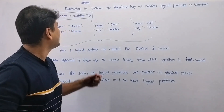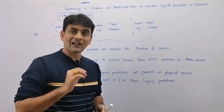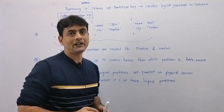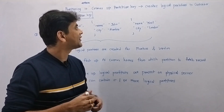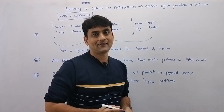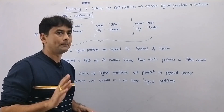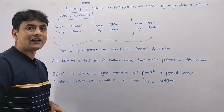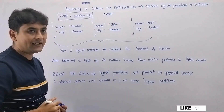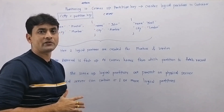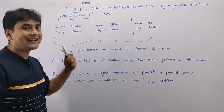In this video, let's discuss partitioning in Azure Cosmos Database. When we create a container, we provide a partition key, and because we have a partition key, the data in a container gets distributed across logical partitions. To understand why we have partitioning, imagine we have created a container called 'c_users' — where 'c' stands for container — and when we created it, we provided the partition key as 'city'.